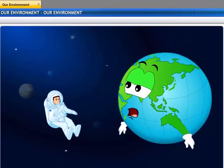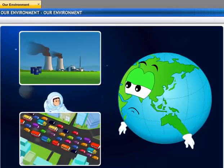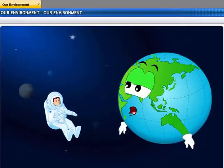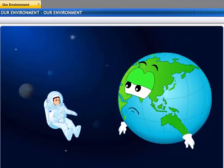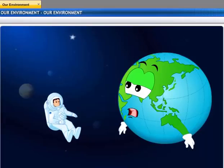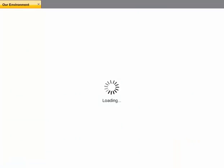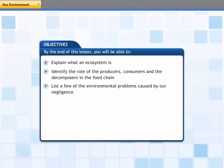Let me take you on an environmental tour to show you why I feel choked and unwell. I will show you how various factors in the environment interact with each other and how human beings impact the environment. By the end of this lesson, you will be able to explain what an ecosystem is.